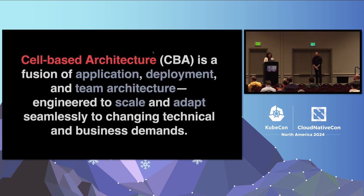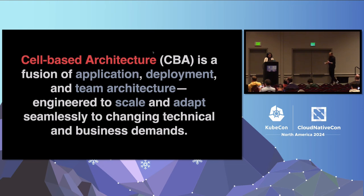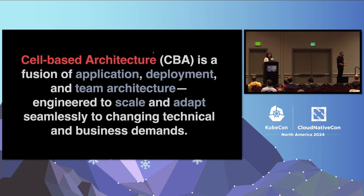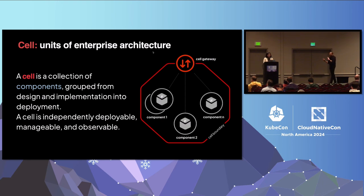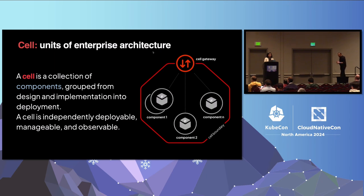Cell-based architecture addresses three things: application architecture, deployment architecture, and team architecture. Unfortunately, some definitions today only speak about deployment architecture, missing the application and team dimensions — those two are important things we introduced in the specification. Like the biological cell, the cell has a boundary, and the atomic unit of cell-based architecture is called a component. A component can be a microservice, an integration component, or any type of workload running inside a cell.